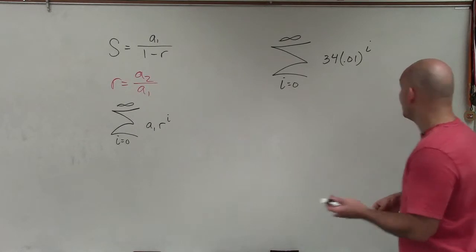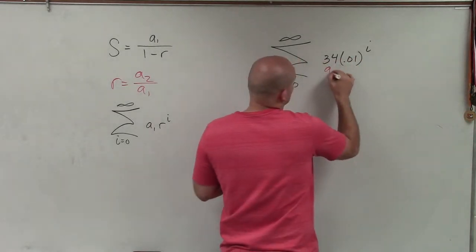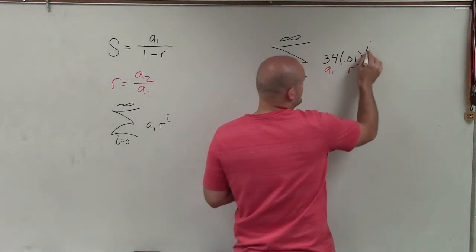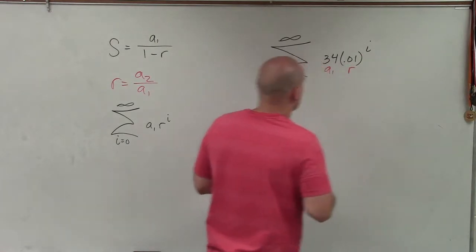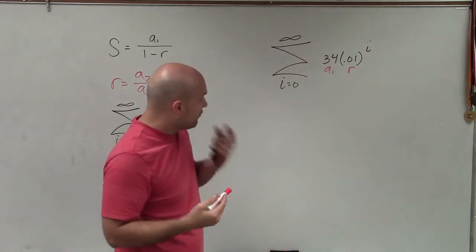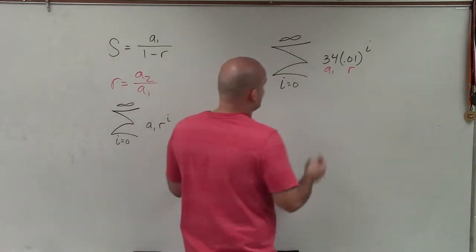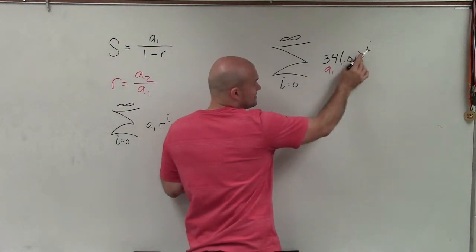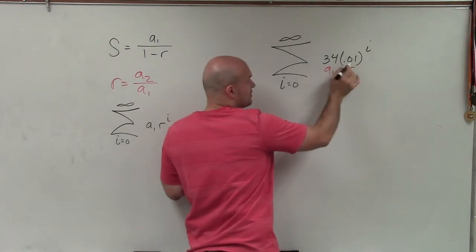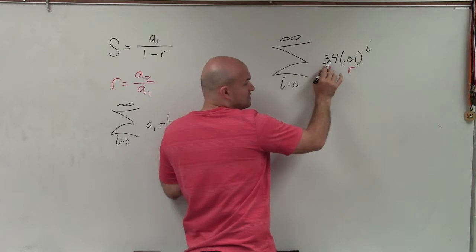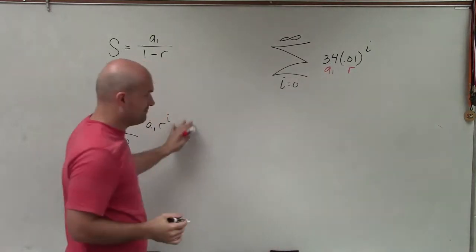So therefore, in the red, I can say, well, here's my a sub 1, and there's my r, because it's raised to that first term. So to find a sub 1, what we can do is plug 0 in for that. Well, anything raised to the 0 power is just going to be 1. So therefore, a sub 1 equals 34, because it's in that same formation.